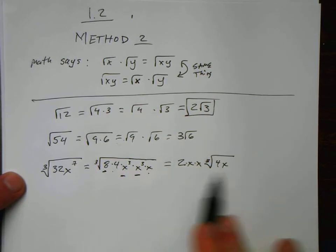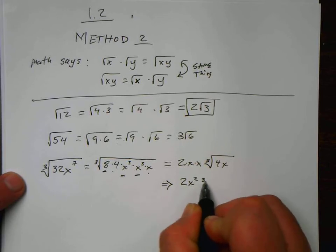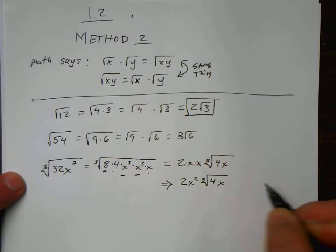Alright, so then I can clean this up and just simply say that it is 2x squared times the cube root of 4x.